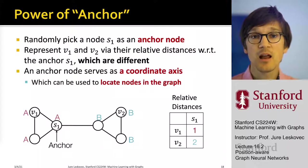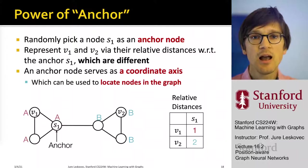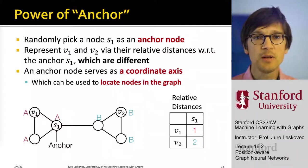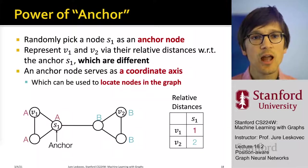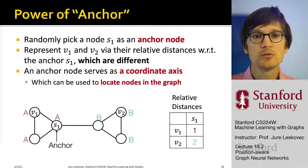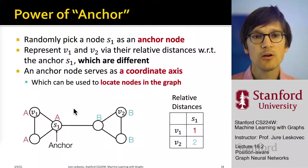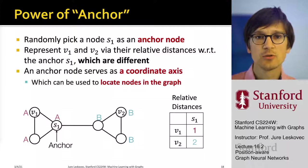We are going to pick these anchors at random. Let's pick node S1 and call it an anchor node. We are then going to represent the position of V1 and V2 by their relative distance to the anchor node. Because the distance of V1 and V2 to anchor node S1 will be different, this will allow us to differentiate or distinguish V1 from V2. The anchor node serves as a reference point — like a coordinate axis — that tells us how far away from it each node is, allowing us to triangulate or locate the position of the node in the graph.